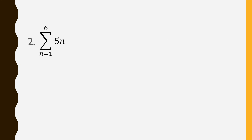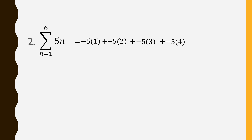Our last item involves a negative expression: the sum of negative 5n as n goes from 1 up to 6. All you have to consider is the entire expression itself, which is negative 5 times the values of n. So we have: negative 5 times 1, negative 5 times 2, negative 5 times 3, negative 5 times 4, negative 5 times 5, and negative 5 times 6. Remember, if the expression is negative 3n, you have negative 3 times n; if it's negative 2n, it's negative 2 times the values of n.